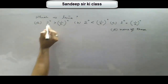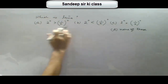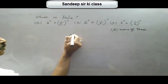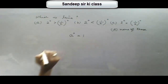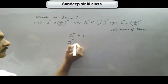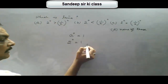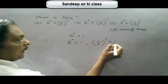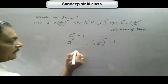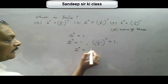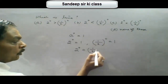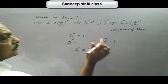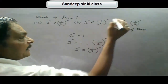Next question is: which is true? Now we know that any number raised to the power 0 is 1. So accordingly, 2 raised to the power 0 is 1 and 1 upon 2 raised to the power 0 is also 1. So both are equal — 2 raised to the power 0 equals 1 upon 2 raised to the power 0, and both are equal to 1.